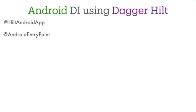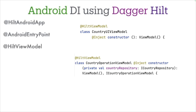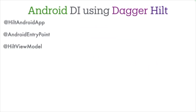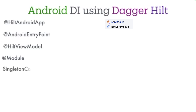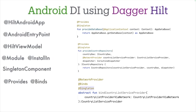We then used @HiltViewModel and constructor injection to get our repositories or data sources right inside the view model. We didn't need any custom factory — Hilt took care of everything. We also explored how to create modules and install them into the singleton component with the @InstallIn annotation. This is where we used @Provides or @Binds, which are methods to define how objects like our database, Retrofit instance, or repositories get constructed.